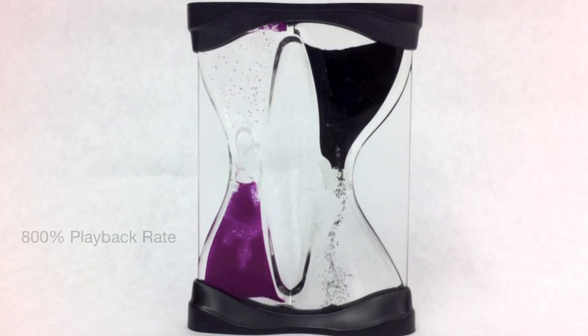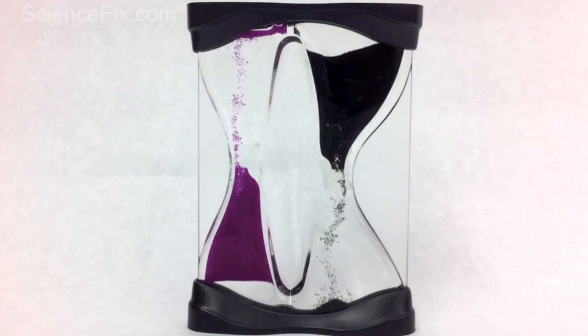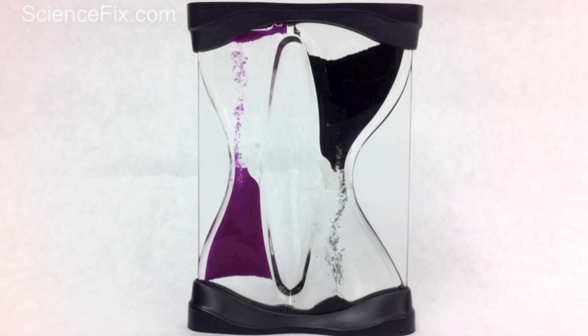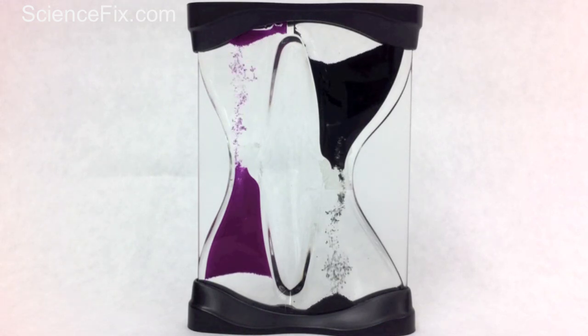So in the density unit, they learn that objects that are more dense than the liquid they're in sink to the bottom. Objects that are less dense than the liquid they're in rise to the top.